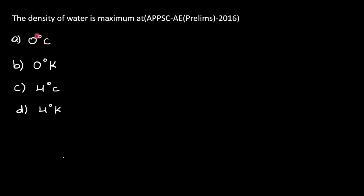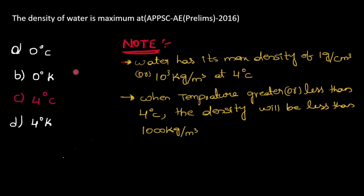Next question: the density of water is maximum at which temperature? The answer is option C, 4 degrees centigrade. Note: water has its maximum density of 1 gram per centimeter cube or 1000 kg per meter cube at 4 degrees centigrade. If temperature is greater or less than 4 degrees centigrade, the density will be less than 1000 kg per meter cube.